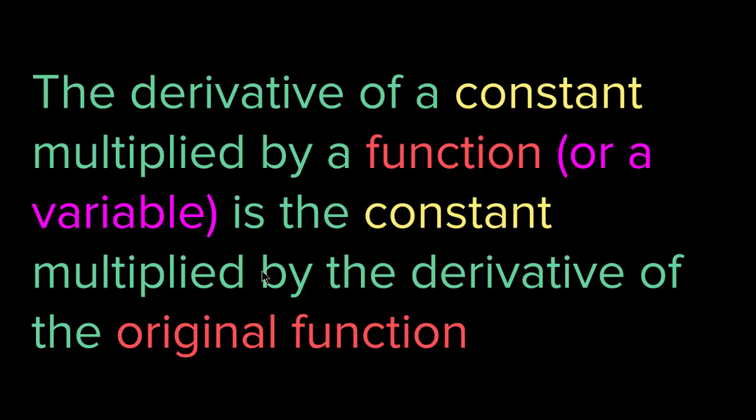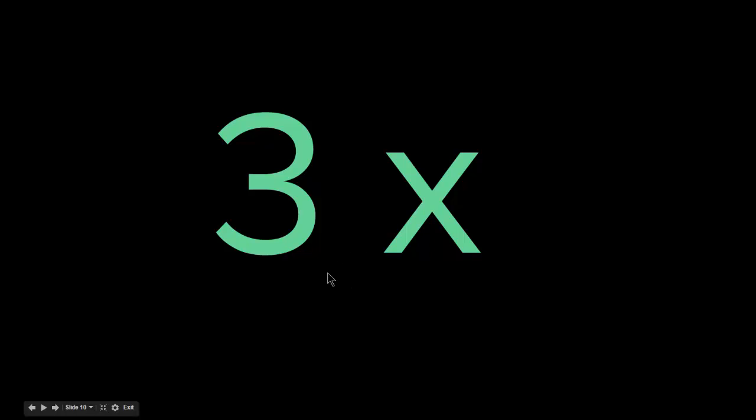So if you have 3x — a constant and a variable — the derivative of that is the constant times the derivative of the variable or the function. So it is 3 times f prime of x, which means 3 times the derivative of x, which is 1. So it is 3 times 1, which equals 3.